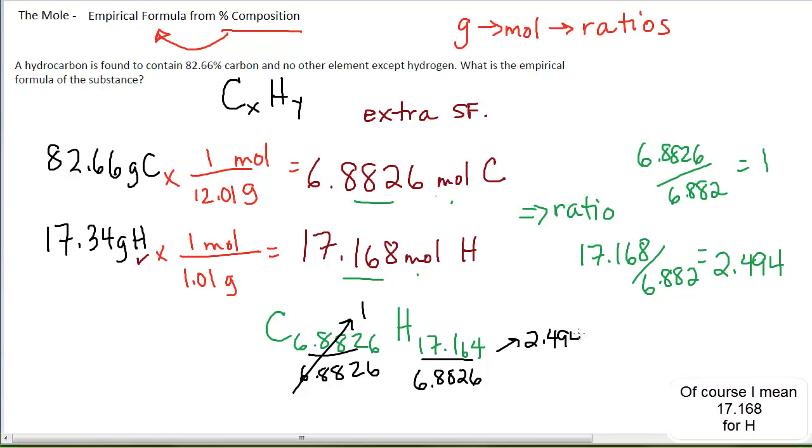But in this case, it gives me 2.494. Now, if this gave me a whole number ratio that was within 0.05 of the whole number, I would be finished, and that would be my answer.